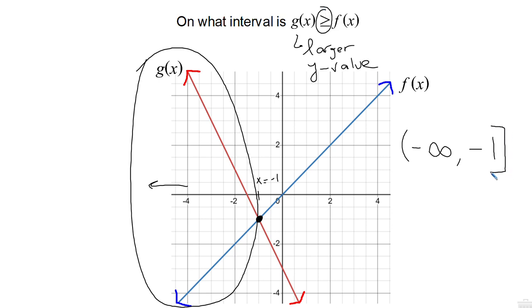We can also write this using inequality notation and say that this is true when x is less than or equal to negative 1, because those are the x values that are less than negative 1: negative 2, negative 3, negative 4, and so on.